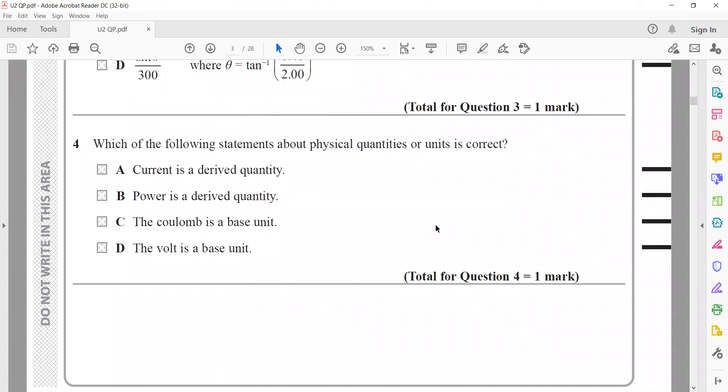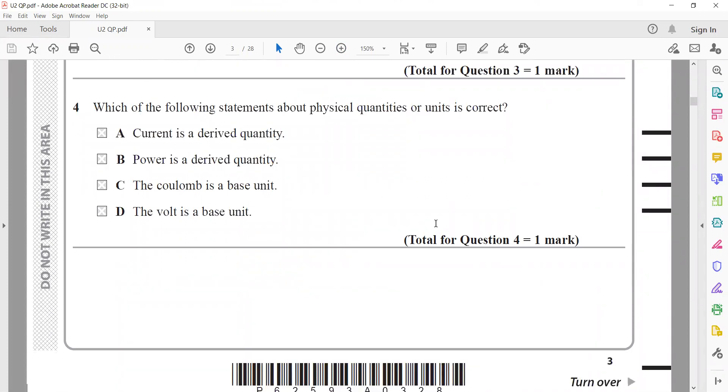Which of the following statements about physical quantities or units is correct? Current is a derived quantity? That's totally wrong, it's a fundamental quantity. Power is a derived quantity? That's true. Coulomb is a base unit? No, it's a derived unit. Volt is a base unit? No, it's also a derived unit. So option B is the right answer.